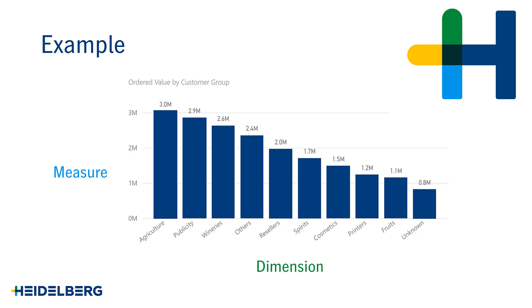The dimension is the customer group, which allows us to slice the ordered value into different categories. You may also notice we have another dimension here used as a filter — it is 'this calendar year'. This ensures that the graph doesn't display all the data in our cube, but simply focuses on the year in hand.